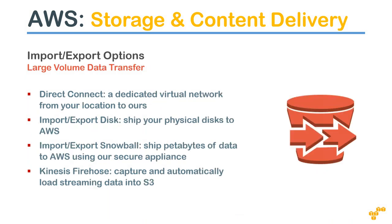For migration, Storage Gateway works well for tens of gigabytes of data. But for hundreds of gigabytes or terabytes, your throughput will decrease and bandwidth costs will get very high. Amazon has something called Import Export Disk - you literally remove your disk from your data center and ship it to Amazon. Amazon will upload the data from the disk into your S3 buckets in any region you want.